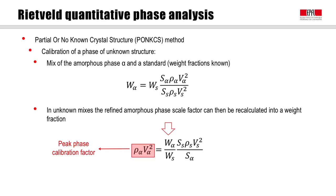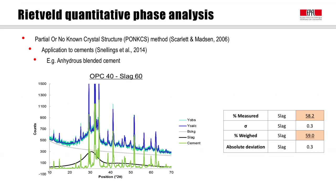A promising development is the so-called PONX method, which stands for partial or no known crystal structure approach. This method takes into account the contribution of a phase that has no or no known crystal structure by calibration of a phase constant. This phase constant can then be used in combination with the refined scale factor to calculate the phase weight fraction in unknown mixes. This method was recently applied to the quantification of the degree of reaction of metakaolin in alkali-activated systems, and also to the quantification of CSH by XRD in the early hydration of alite.